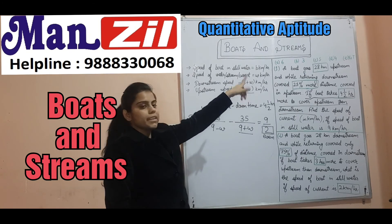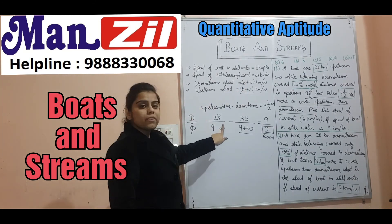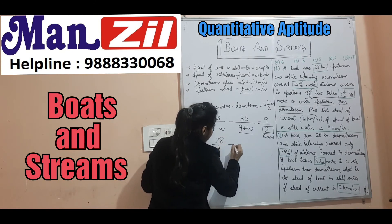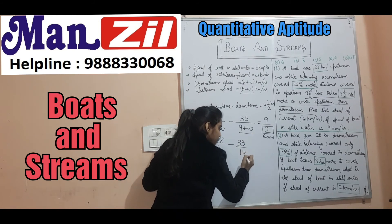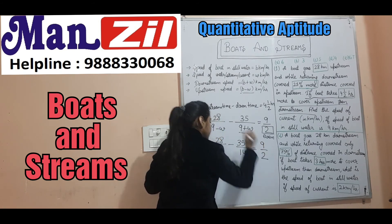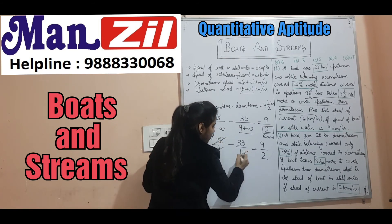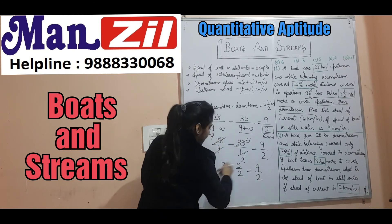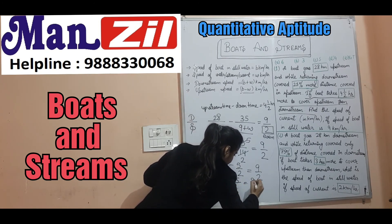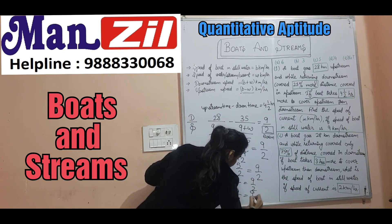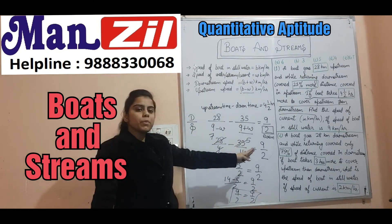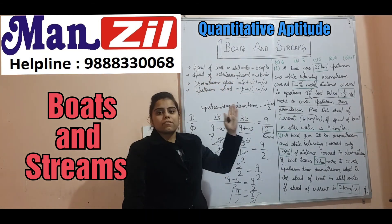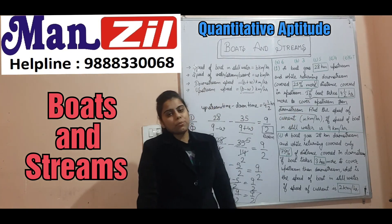Next, let's check option W = 5. First verify the base: 9 minus 5 = 4, which is even — good. So: 28/4 minus 35/14 = 9/2. Simplifying: 7 minus 5/2 = 9/2. Taking LCM: 14/2 minus 5/2 = 9/2. That gives 9/2 = 9/2. It satisfies! Right-hand side was 9/2 and left-hand side also became 9/2 using option C. So the answer is W = 5 km per hour. Speed of current is 5 km per hour.